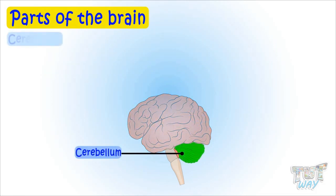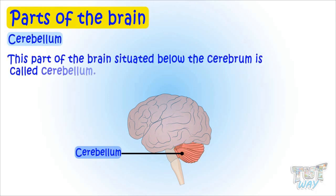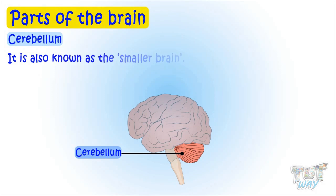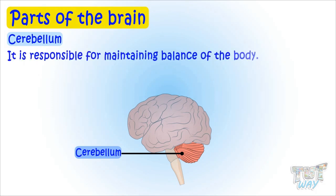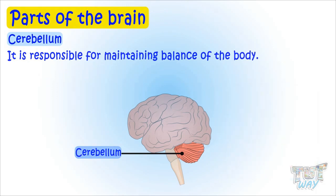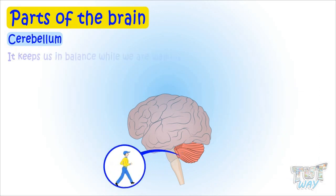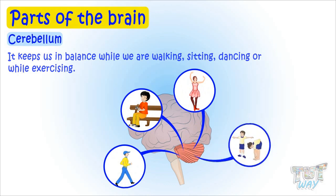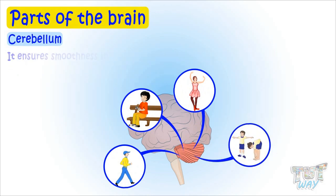Next is the cerebellum, situated below the cerebrum. It is also known as the smaller brain, and its main function is to make sure that the balance of our body is maintained — keeping us balanced while we are walking, sitting, dancing, or exercising, ensuring smoothness in our movements.